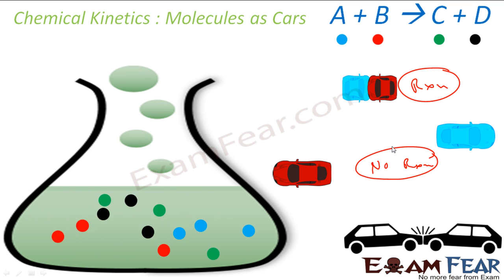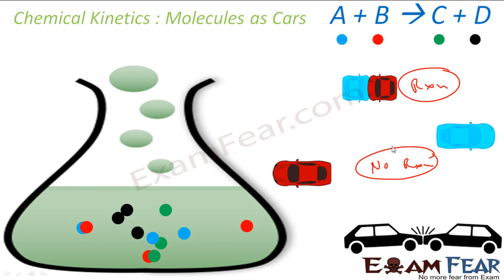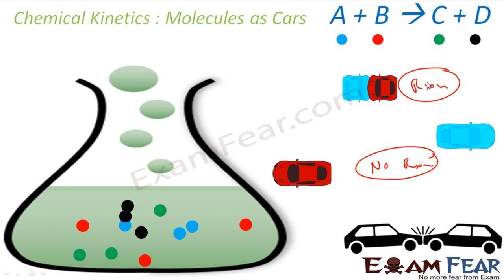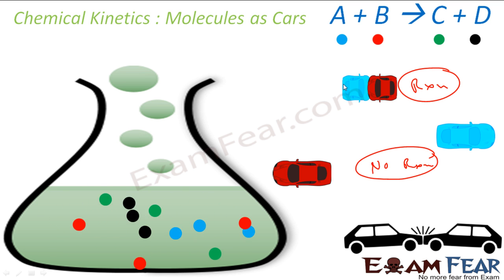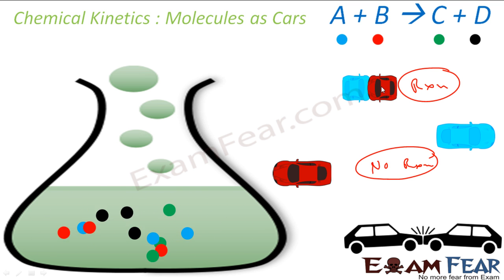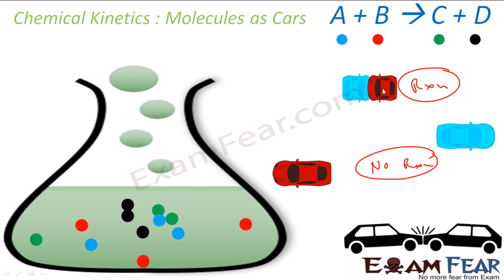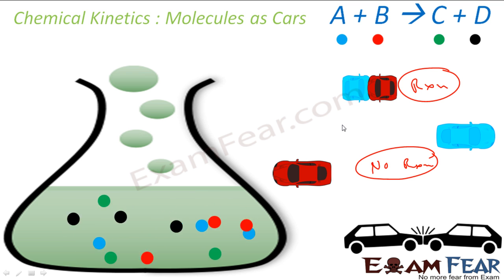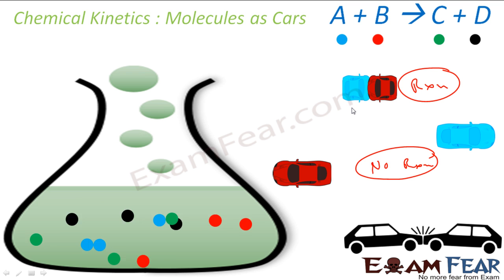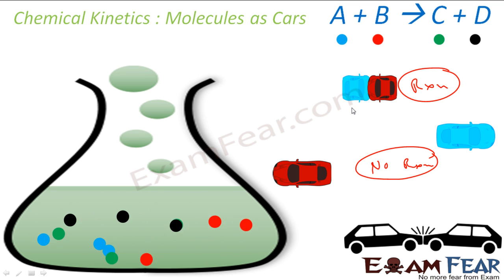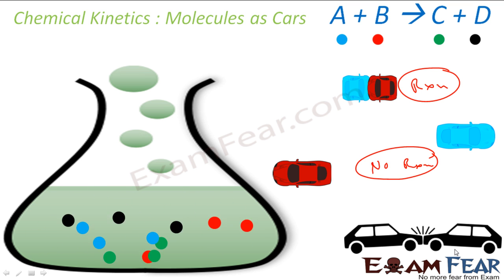In the whole chapter, we will consider molecules as cars and try to understand how the reaction is happening. We will talk about the feasibility of the reaction — in one case the reaction was visible, in another it didn't happen. We will talk about the extent of the reaction, the number of blue and red cars, and the speed of the reaction, among many other factors. The bumping of cars represents the reaction, and the final broken car is the product.